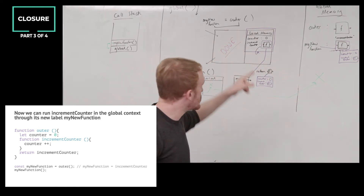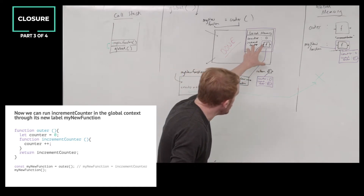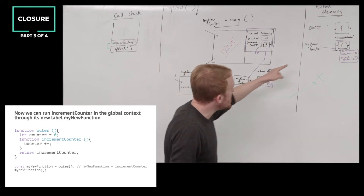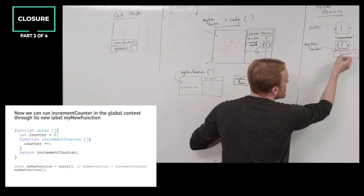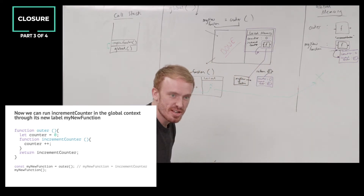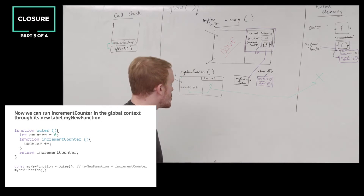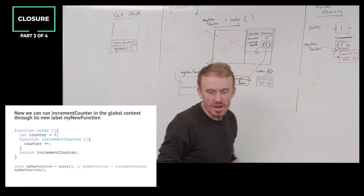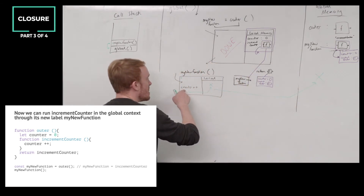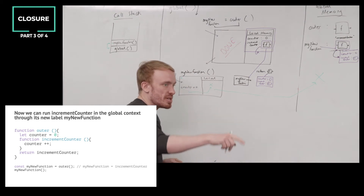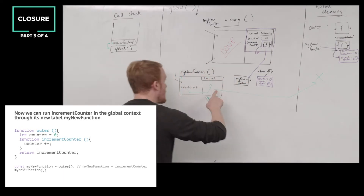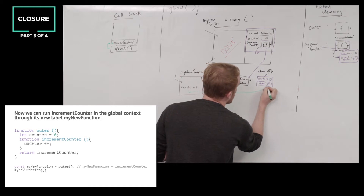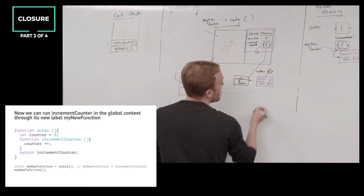Increment counter is now a function stored in memory. When we returned increment counter we brought with it all the live data from when that function was defined — all on the back of that increment counter function. So attached now to my new function is that backpack of live data on the back of the function. What actually do you think is the process when I end up calling my new function — the function with the backpack of data — and I hit the line counter++? Where do I look first? Inside the backpack. And where do I look next before global? Into the backpack.